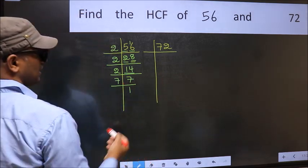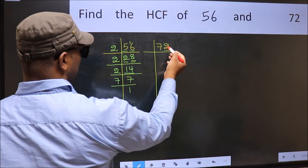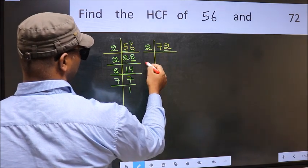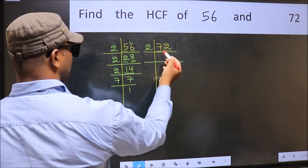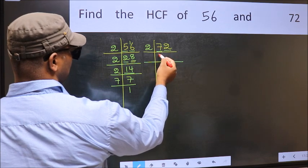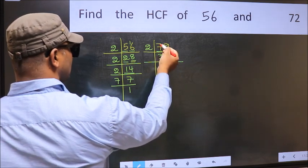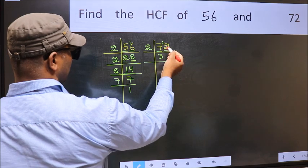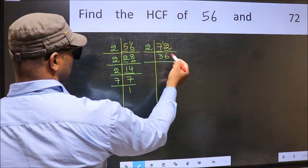Now the other number. Last digit 2 is even, so take 2. First number 7. A number close to 7 in the 2 table is 2×3=6. 7-6=1, carry forward 1 to get 12. When do we get 12 in the 2 table? 2×6=12.